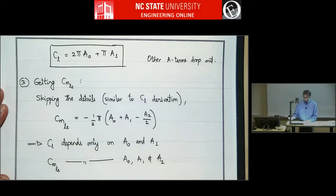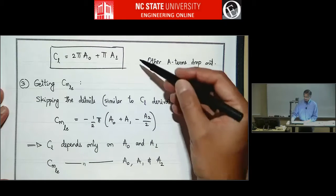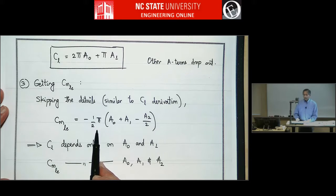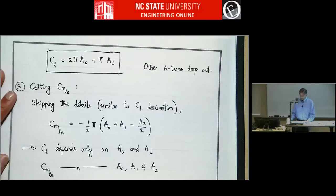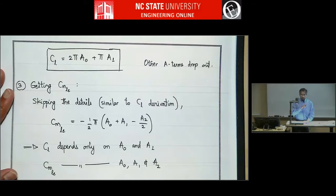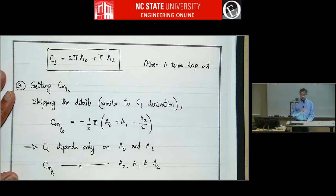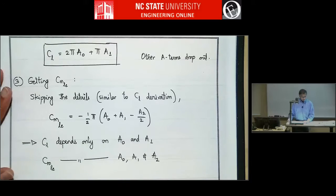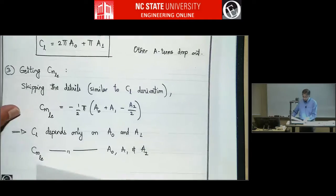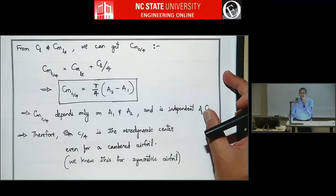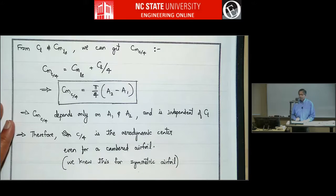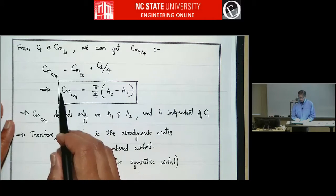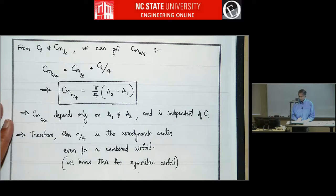Then we can get pitching moment about the leading edge — the derivation is very similar to lift coefficient — and CM-leading-edge is minus half pi times (a0 plus a1 minus a2 over 2). So lift coefficient depends only on a0 and a1, pitching moment about the leading edge depends on three terms a0, a1, and a2. From these two you can get pitching moment about the quarter chord. Pitching moment about the quarter chord equals CM-LE plus CL divided by 4, which gives CM-c/4 equals pi over 4 times (a2 minus a1). This depends only on a1 and a2 and is actually independent of CL.